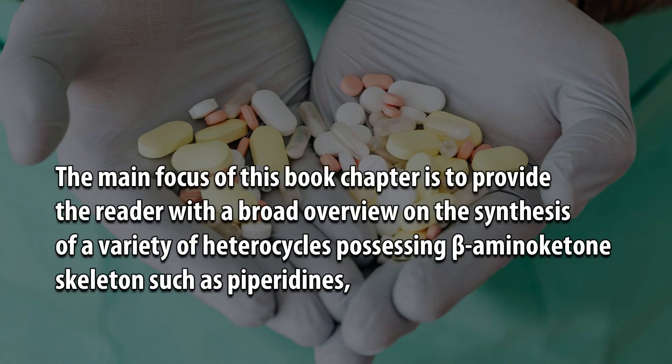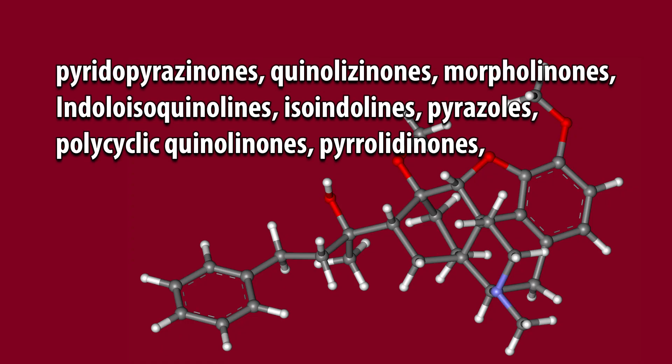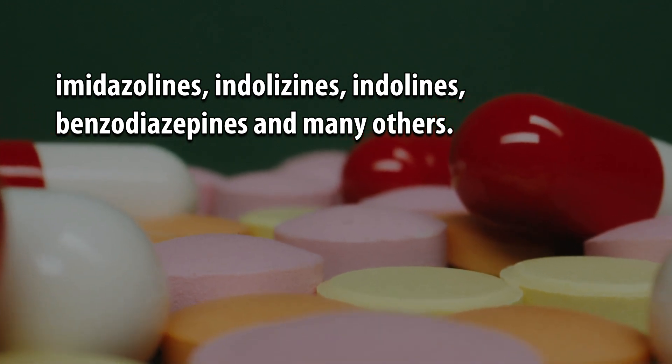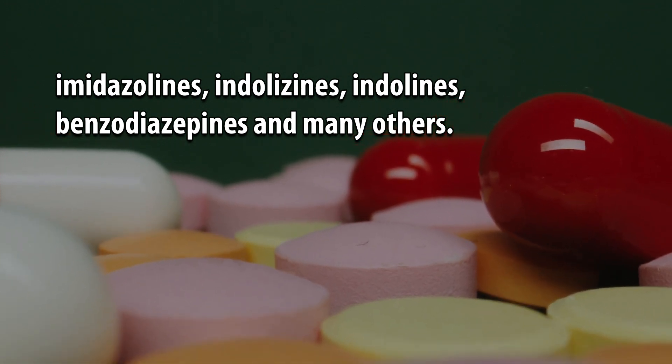The main focus of this book chapter is to provide the reader with a broad overview on the synthesis of a variety of heterocycles possessing beta-aminoketone skeletons, such as piperidines, pyrrolopyrazinones, quinolizonones, morpholinones, indoloisoquinolines, isoindolines, pyrazoles, polycyclic quinolinones, pyrrolidinones, imidazolines, indolizines, indolines, benzodizepines, and many others.